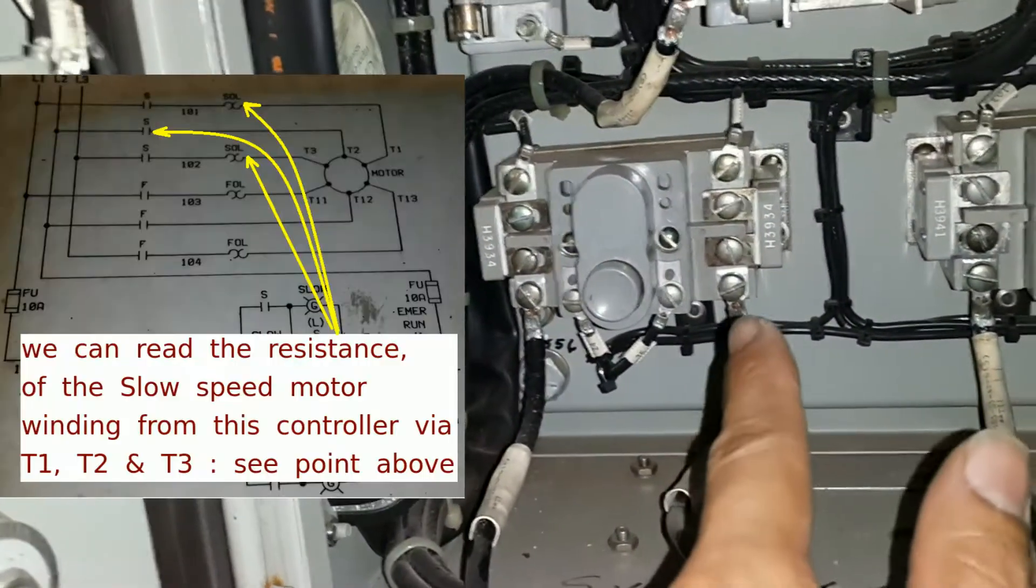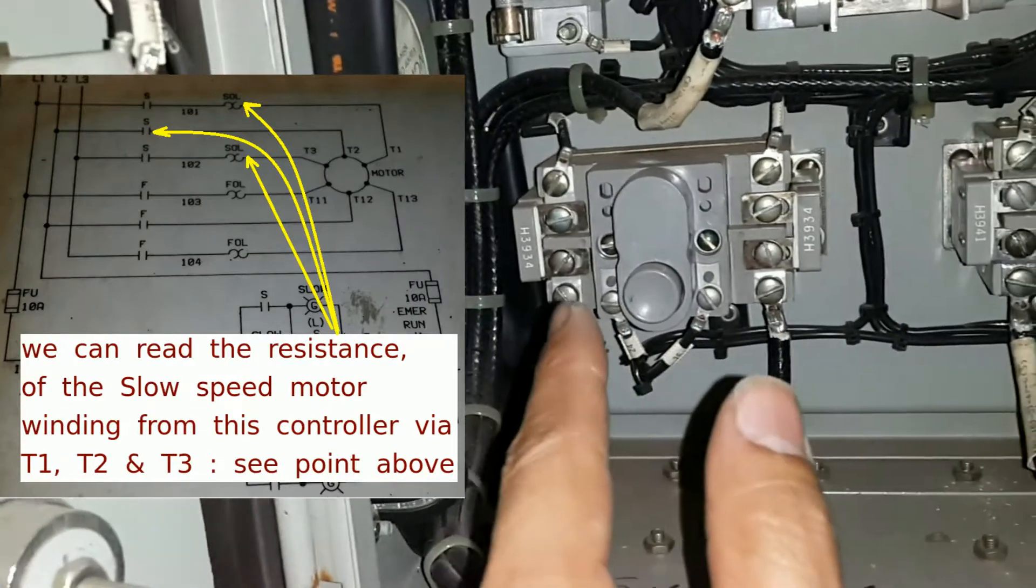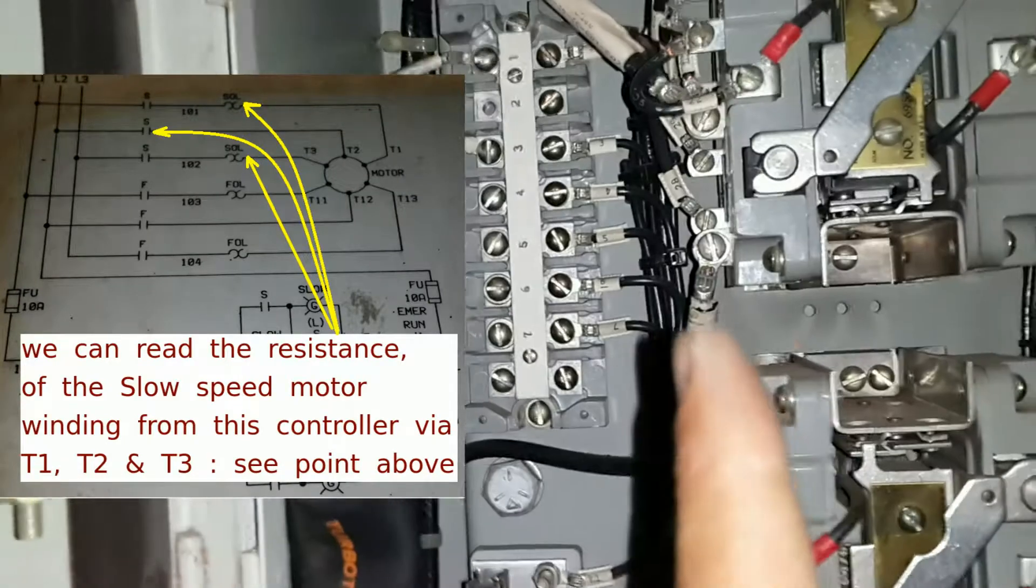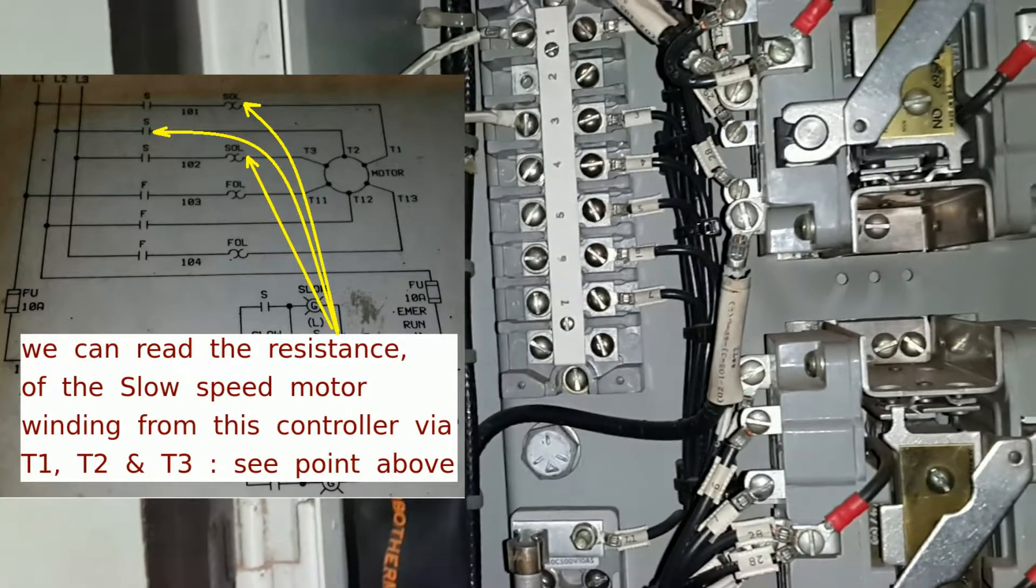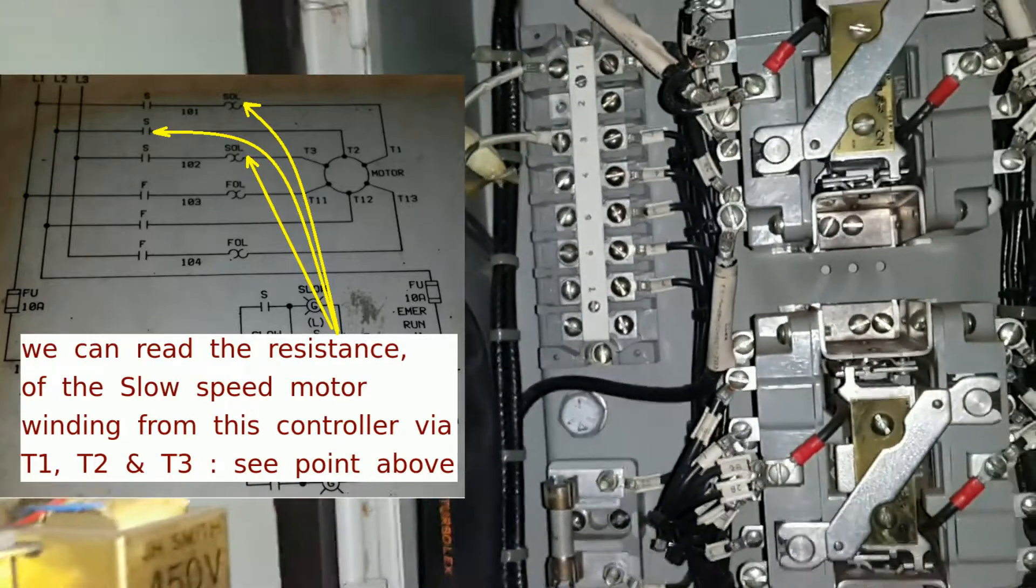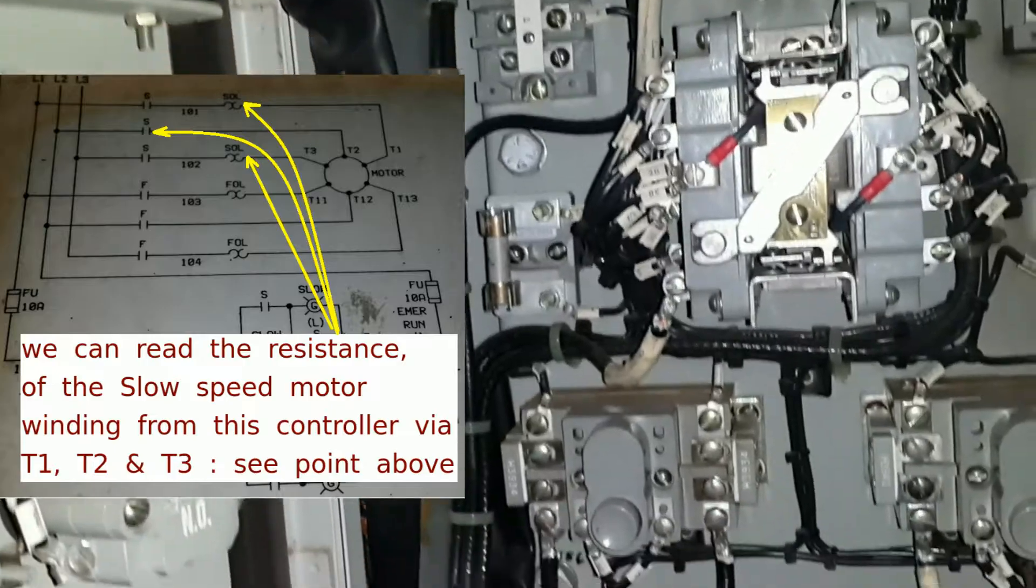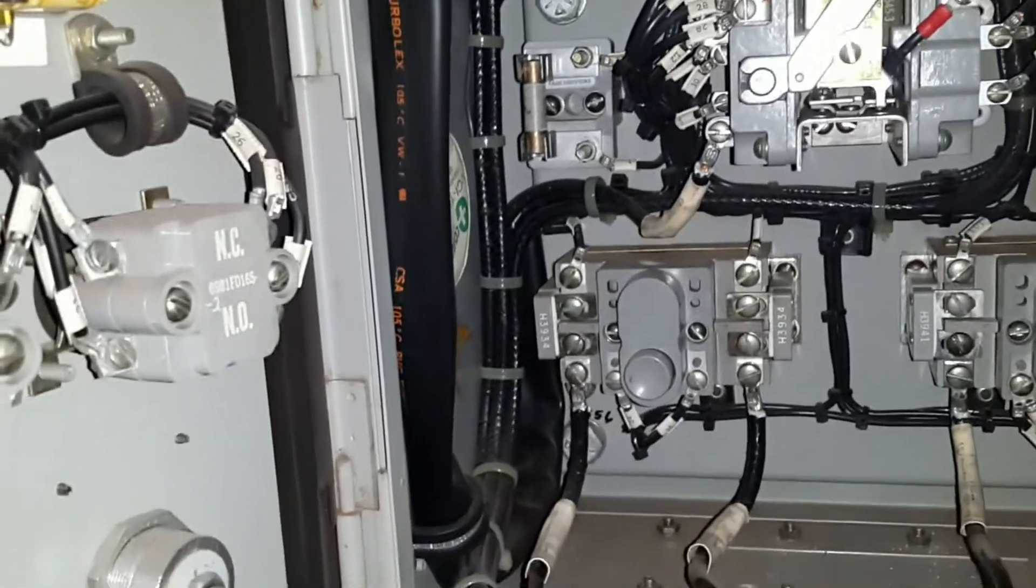If we wanted to read the low speed windings, then we will have to put a multimeter in there, there, and then there so that we get T1, T2, and T3. And remember, we're always looking for that five percent balance in the motor windings.